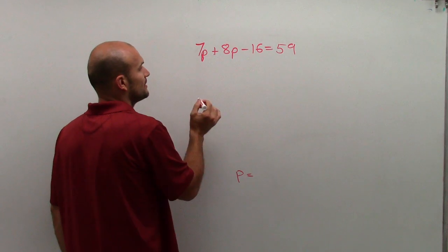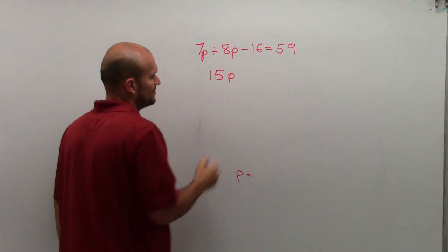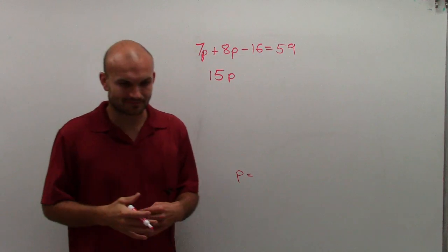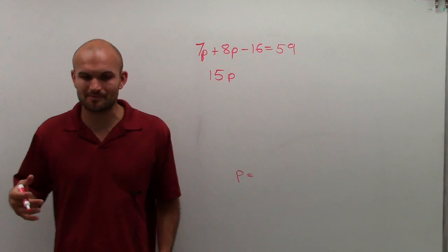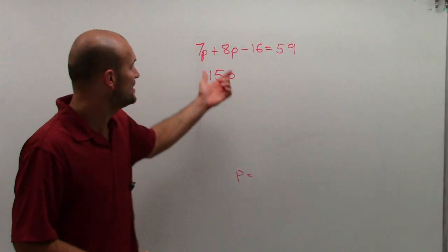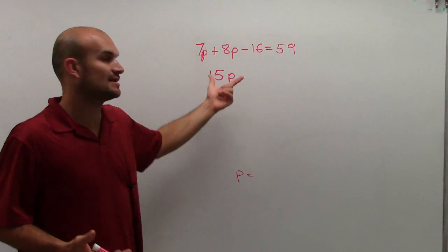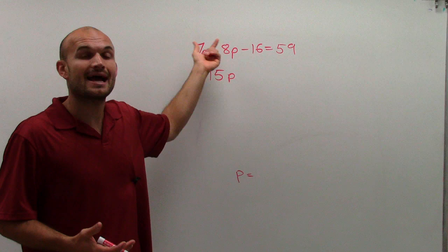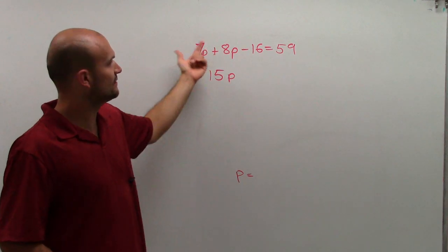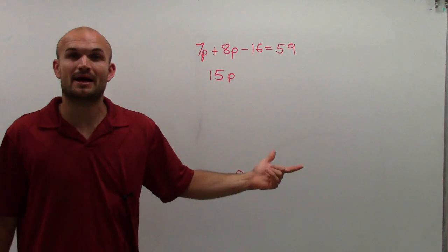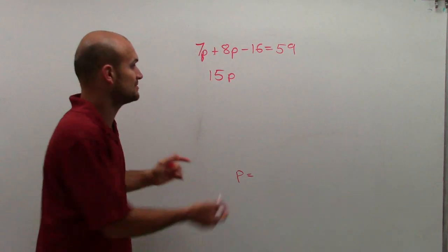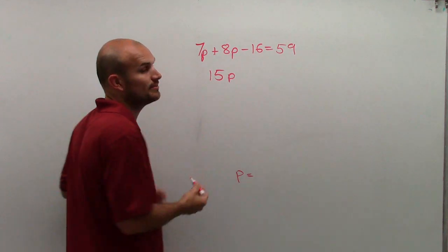So 7p plus 8p is 15p. Even though pineapples wouldn't be a good example because p is a variable, just for you to understand, when they have the same variable factors, we're just adding the coefficients. You can think of 7 pineapples plus 8 pineapples equals 15 pineapples, meaning this p is still around.